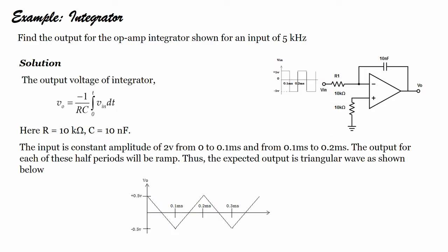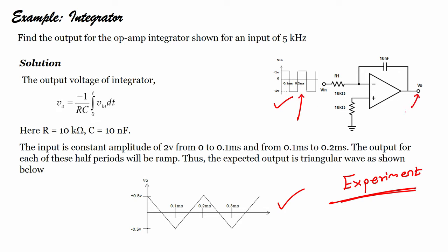Let us take another example. The integrator is also used to change the shape of a signal — it is a waveform shape generator. If I apply a square wave input, I can obtain a triangular wave at the output. We will see this in the experimental section, where I will show how to design the integrator and demonstrate what input signal is applied and what output signal results.